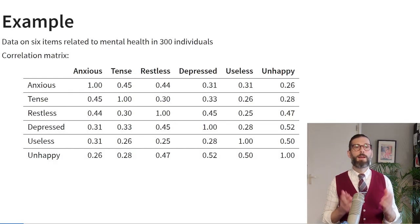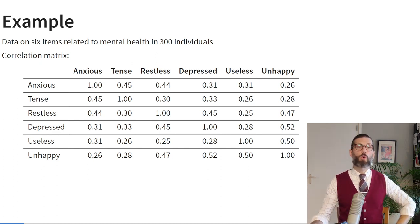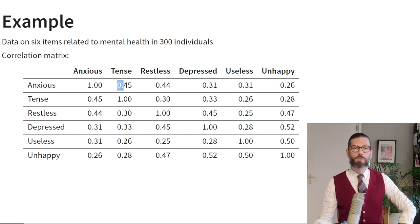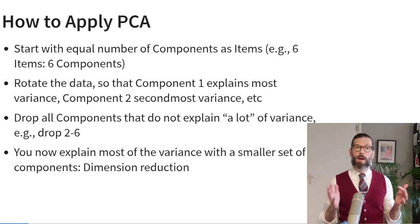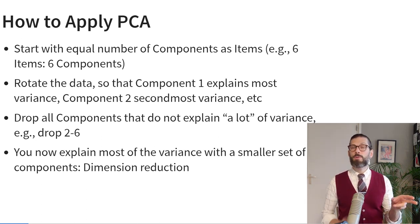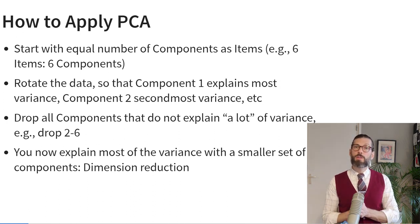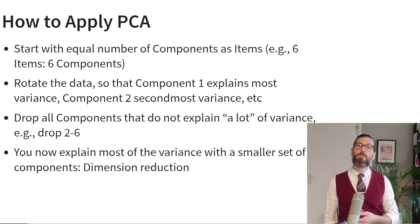Here is data on six questions related to mental health in 300 participants, represented as a correlation matrix. We see the variables anxious, tense, restless, depressed, useless, and unhappy. Of course anxious correlates perfectly with anxious, so the diagonal correlation is 1. But anxious correlates moderately with tense at 0.45, and pretty low with unhappy at 0.26. When we conduct PCA, we start by representing this correlation matrix with an equal number of components as there were items — six items, six components. We rotate the data so that component one explains the majority of the variance, component two the second most, and so on. We can then decide to drop components that do not explain much variance.